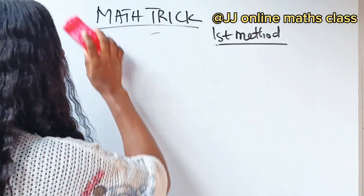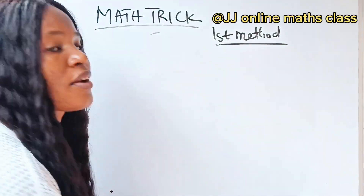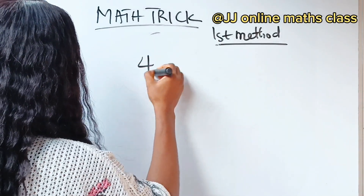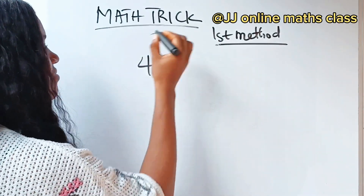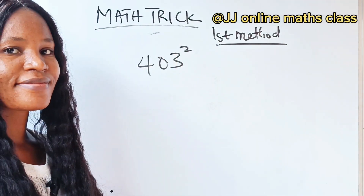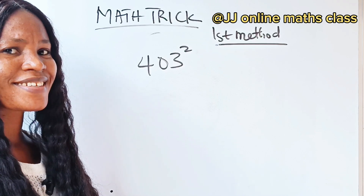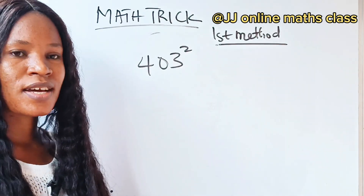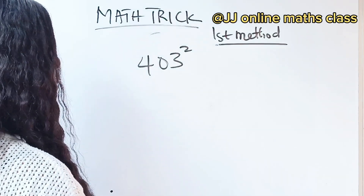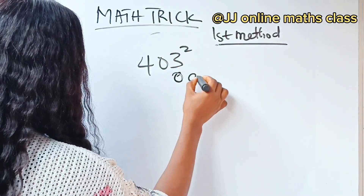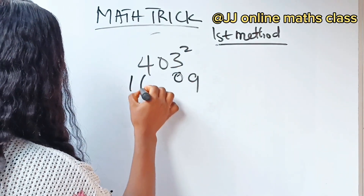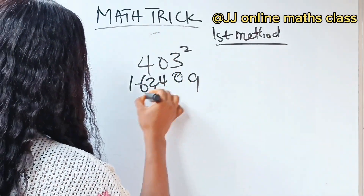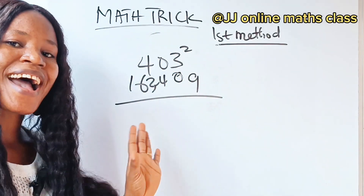Now do this one in three seconds: what if you have 403 squared? Let's do it as fast as possible. Three squared is nine — leave space here. Four squared is 16. Four times three is 12, and double of that is 24. And that is your answer.